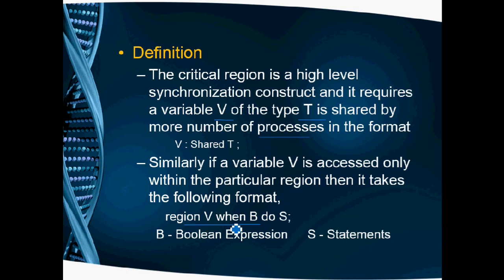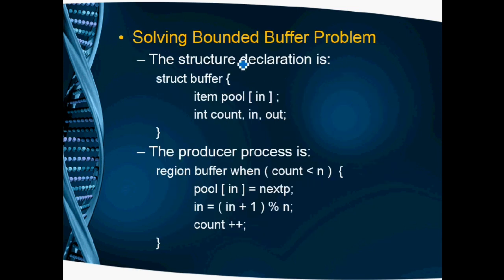In the format, V is the variable. B is a boolean condition or boolean expression. If it is true, we have to execute S, which is a set of statements. For the bounded buffer problem solved using semaphore, we can solve the same problem using critical region. In C language, we create a structure named buffer. This structure contains the buffer pool, in and out pointers for storing and taking elements, and count for how many items are available in the buffer.